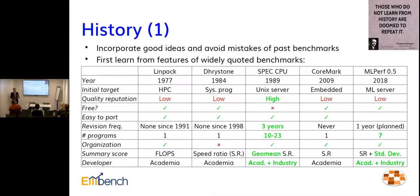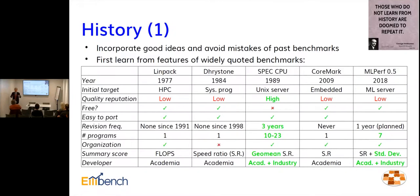Dhrystone comes from a very early paper by Reinhold Weicker in 1984. Before it, there was Knuth's paper and Whetstone, which is where Dhrystone gets its name. It was the idea of a synthetic benchmark — not a real program, but one having all the features of real programs as used in system programming. So now we have a single program that's good for evaluating system programs. Then in 1989 we get SPEC — a set of programs for evaluating computers, particularly those that are going to be used as servers.